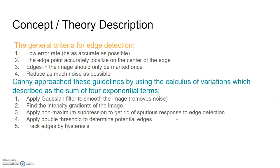Here's the concept of this algorithm. The general criteria for edge detection are as follows: one, it has to have a low error rate, meaning it has to be as accurate as possible; two, the edge point accurately localizes on the center of the edge; three, the edges in the image should only be marked once; and four, reduce as much noise as possible. Canny approached these guidelines by using a calculus of variations, described as a sum of four exponential terms.